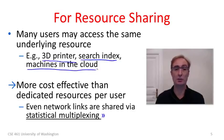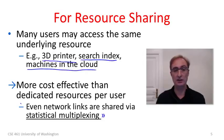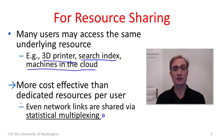Imagine buying a printer for everyone who wanted to print occasionally. In a network, even the network links — the bandwidth of the network — is shared by an arrangement called statistical multiplexing, which I'll explain in just a moment.